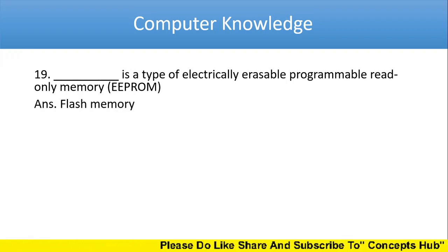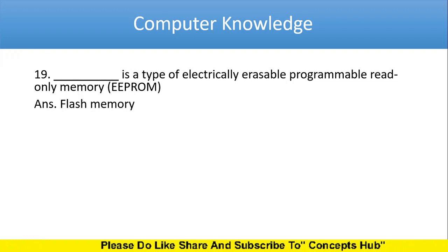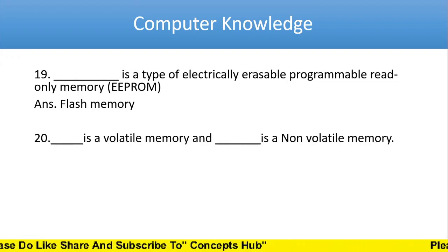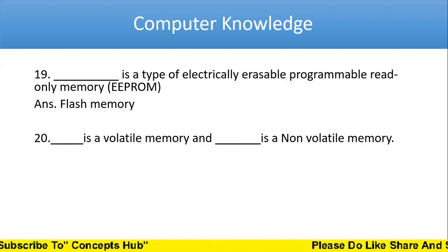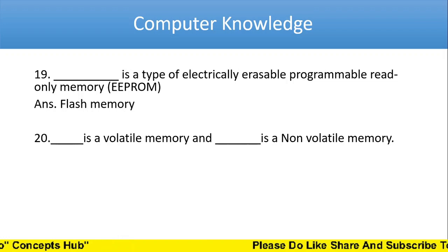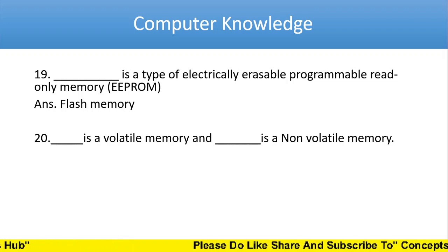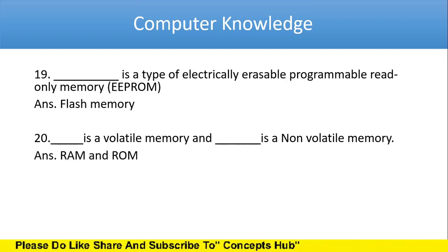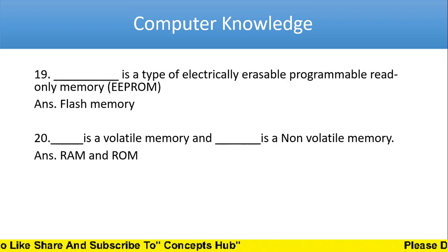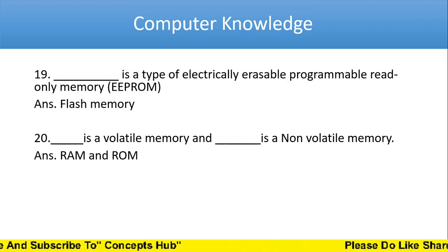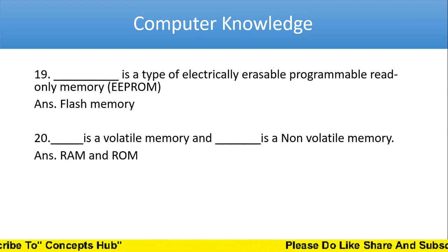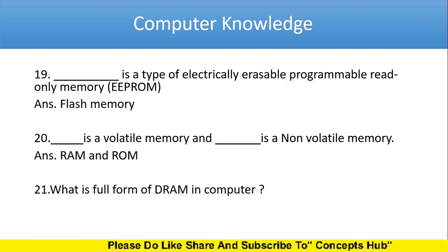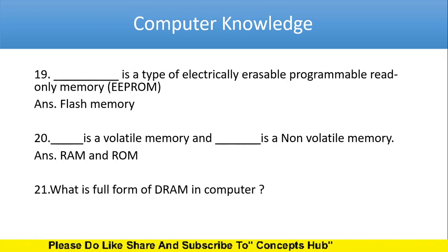Next one: dash is a volatile memory and dash is a non-volatile memory. Which is volatile and which is non-volatile? RAM is a volatile memory and ROM is a non-volatile memory. Next: what is the full form of DRAM in computer? The answer is Dynamic Random Access Memory.